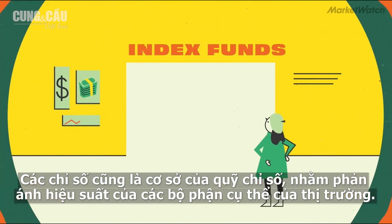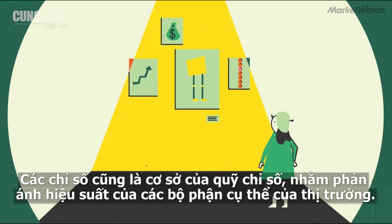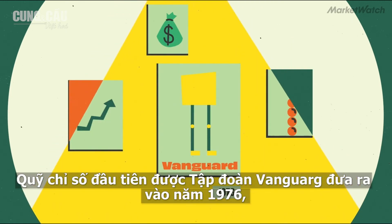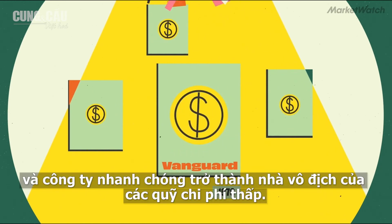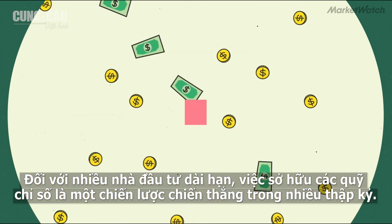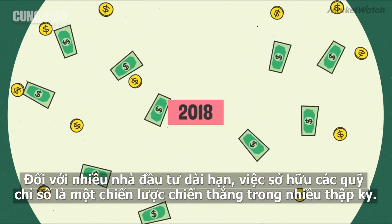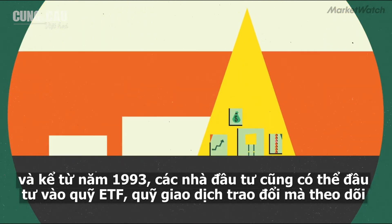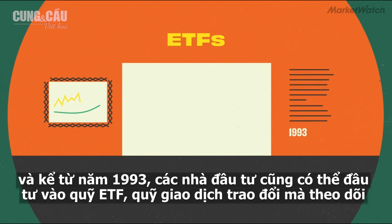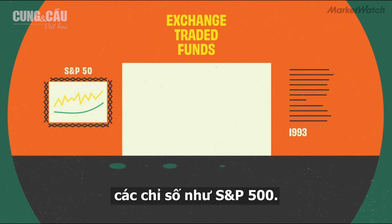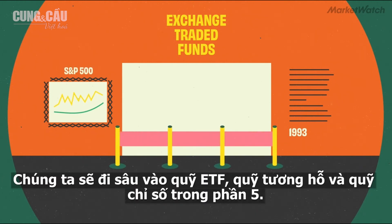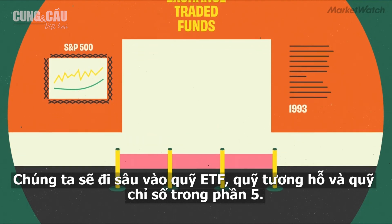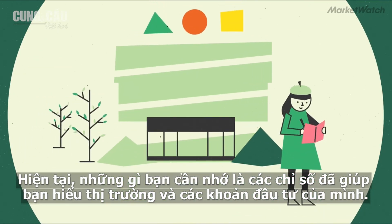Indexes also form the basis of index funds, which aim to mirror the performance of specific parts of the market. The first index fund was launched by Vanguard in 1976, and the company was an early champion of low-cost funds. For many long-term investors, owning index funds has been a winning strategy for decades. Since 1993, investors have also been able to invest in ETFs — exchange-traded funds — that track indexes like the S&P 500. We'll dive into ETFs, mutual funds, and index funds in episode five. For now, what you need to remember is that ultimately indexes help you understand the markets and your investments.